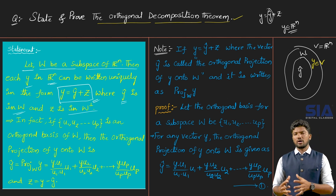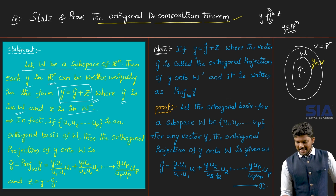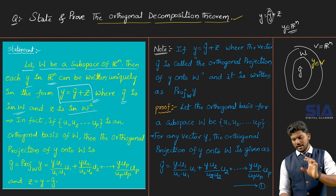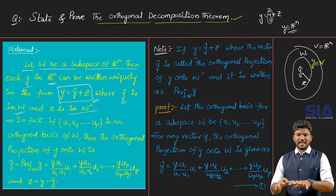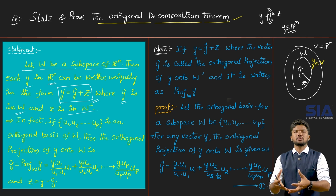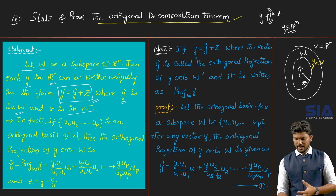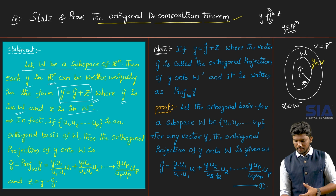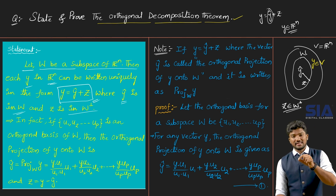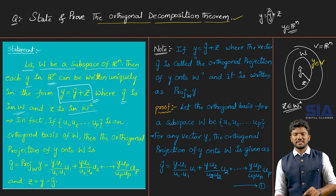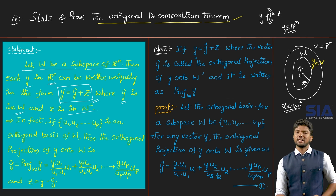So z is in the orthogonal complement of W, which we write as W-perpendicular. Here z belongs to W-perpendicular, meaning z is a non-zero vector that satisfies the orthogonal condition with each and every vector in W. For any vector in W — in the y-hat format — z dotted with that vector equals zero.